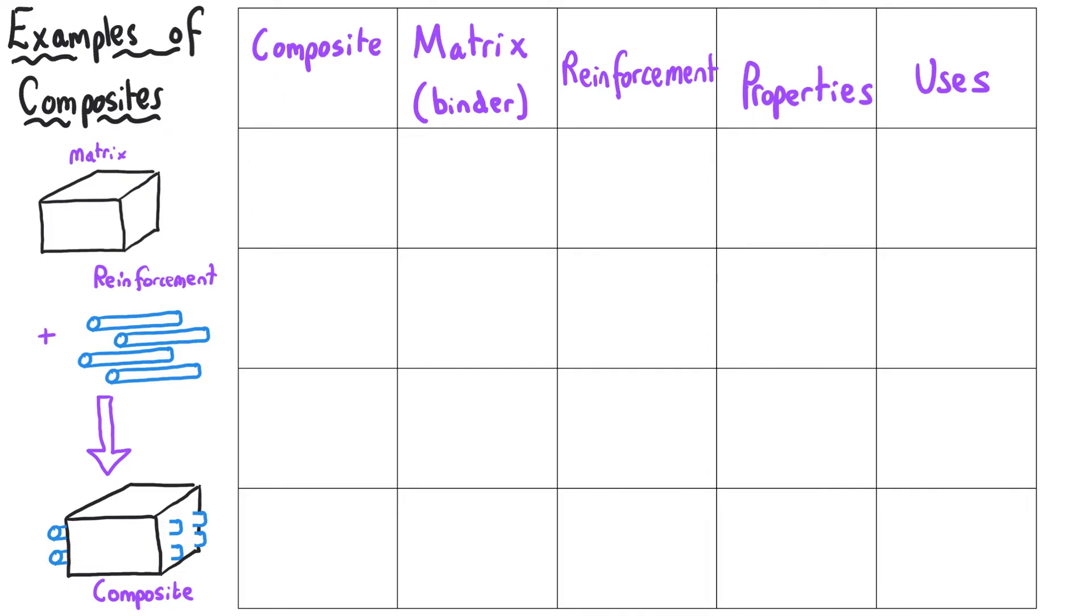For instance, the most common composite material in a GCSE question is fiberglass. In this instance, the matrix or the binder that holds the substance together is some kind of resin, normally polyester. And then the reinforcement that runs through it is literally fibers made from glass.